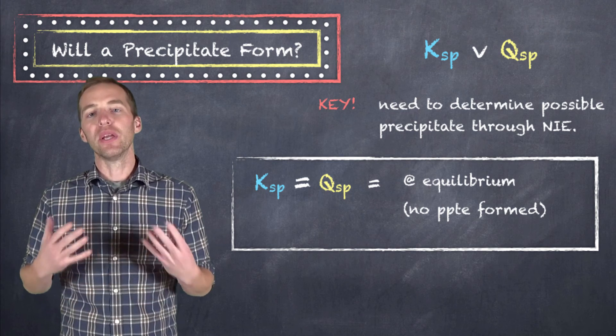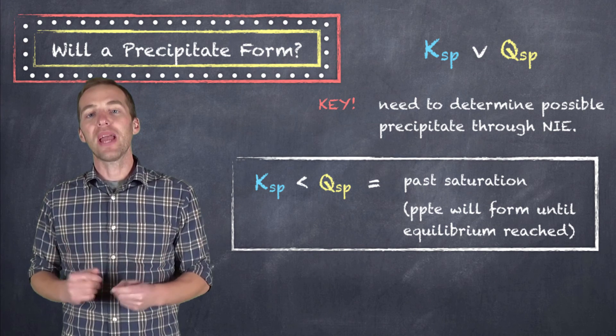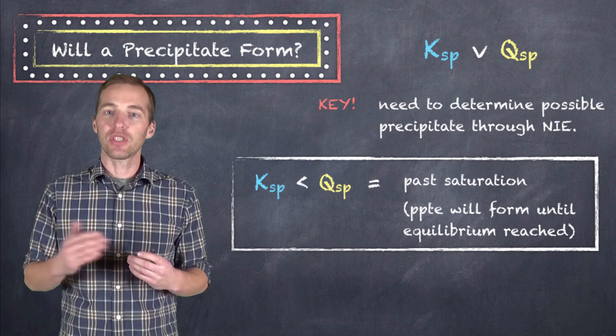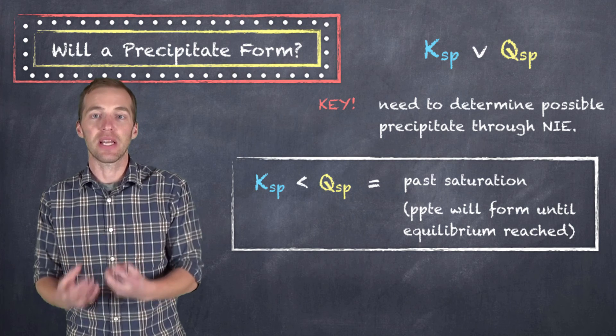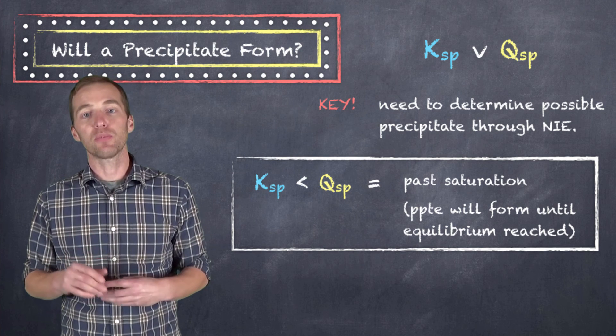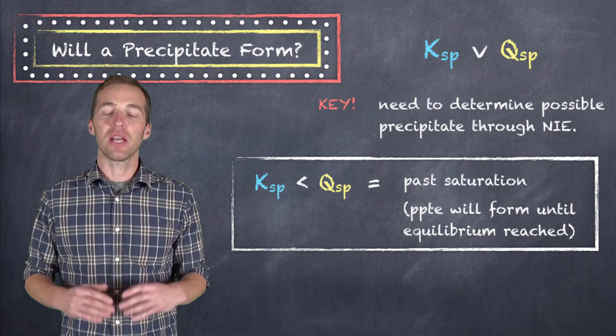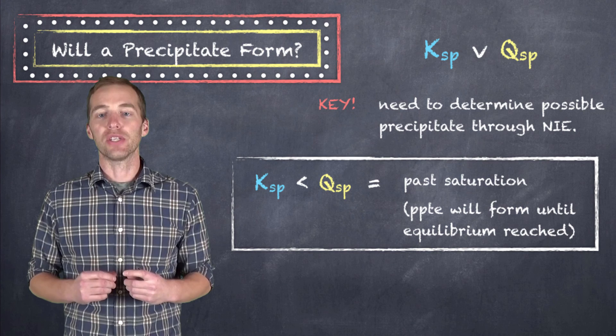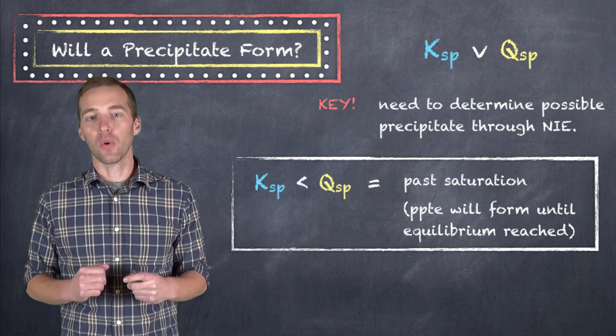And then finally, when we achieve a scenario where the Qsp is greater than the Ksp, what we have is a solution that's beyond the point of saturation. So we are going to have a precipitate formed until such time that enough ions have precipitated out of solution as a solid that we have an equilibrium scenario. So if our Qsp is greater than our Ksp, again we have a scenario where the ions have to precipitate out and form a solid until such time that those ion concentrations are equal to the equilibrium concentration. And then at that point, no more precipitation is going to be formed.